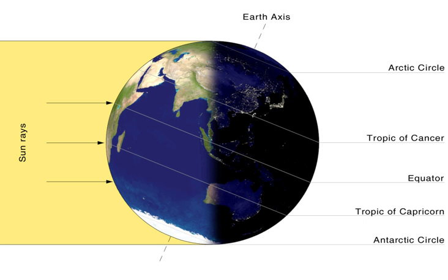For an observer on the North Pole, the Sun reaches the highest position in the sky once a year in June. The day this occurs is called the June solstice day. Similarly, for an observer on the South Pole, the Sun reaches the highest position on the December solstice day.